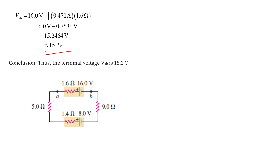Hence we have calculated the value of current I flowing through the circuit as 0.471 ampere in the counterclockwise direction, and the terminal voltage across the 16-volt battery comes out to be 15.2 volts.